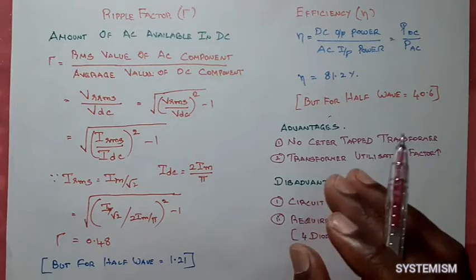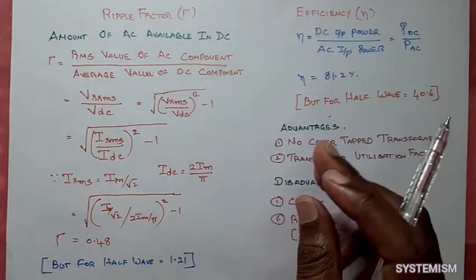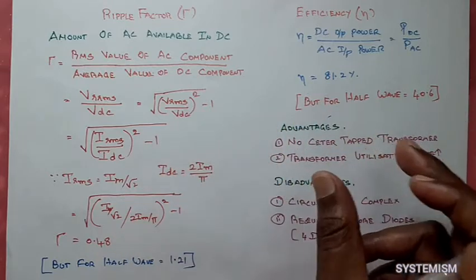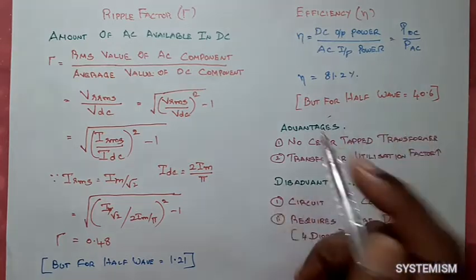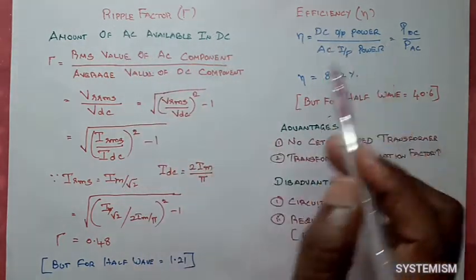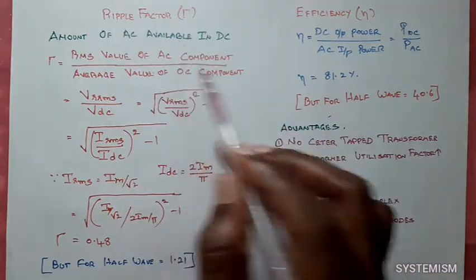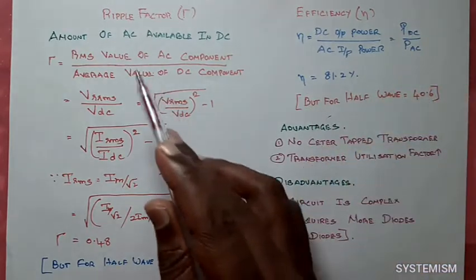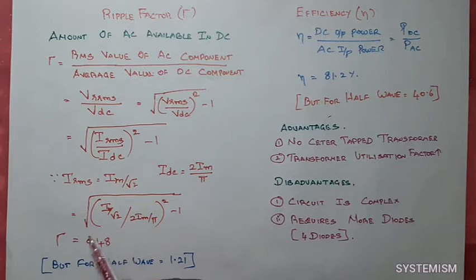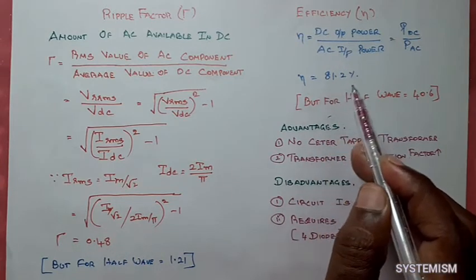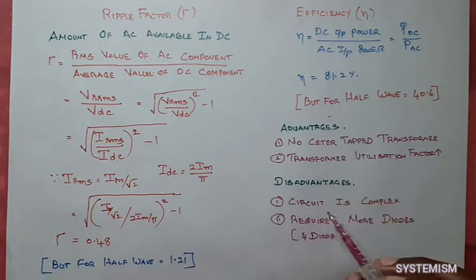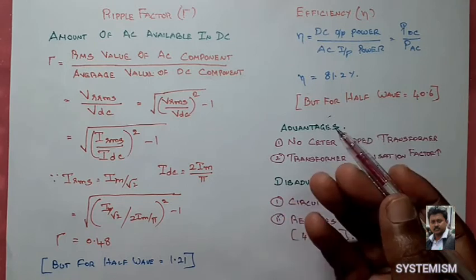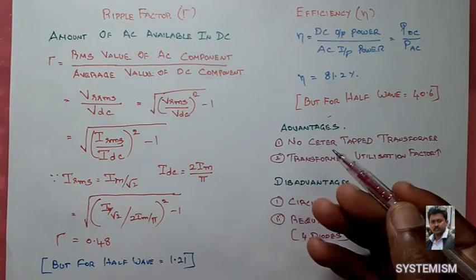In this video, we have learned about what is a bridge rectifier, what are all the operations, and how it converts a normal AC signal into a pulsated full wave DC signal. We have also learned about what is ripple factor and efficiency. Ripple factor must be less and efficiency must be more for a good rectifier. The ripple factor is 0.48 and efficiency is 81.2% for a bridge rectifier. I hope you understand this video. If you like this video, share with your friends and subscribe to our channel. Thank you.